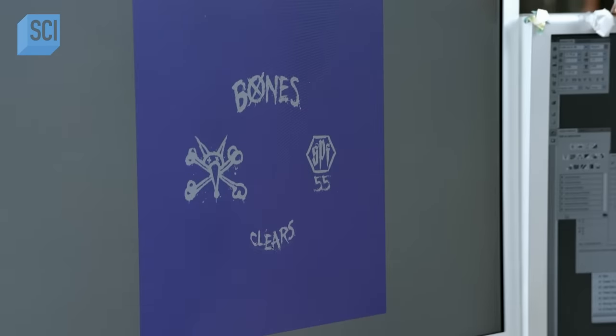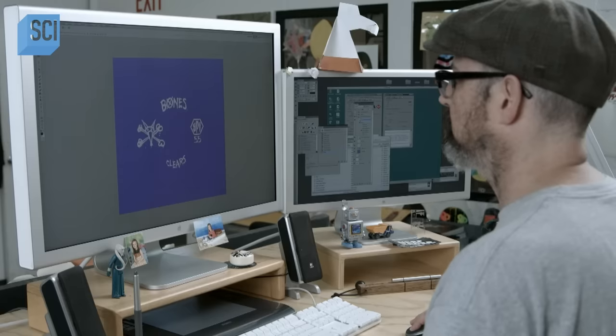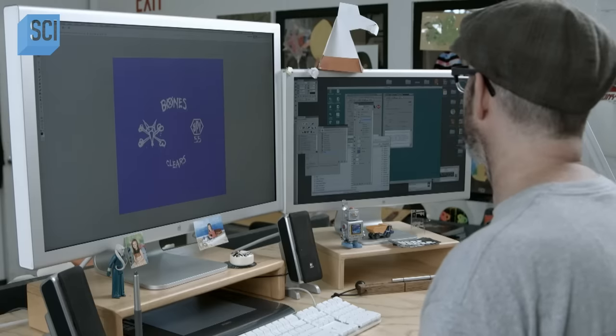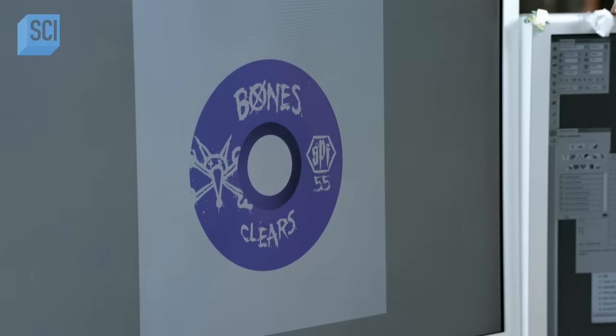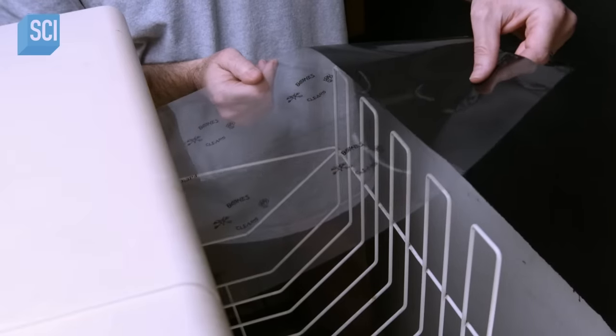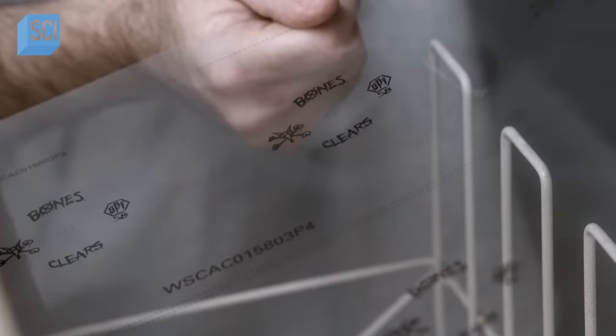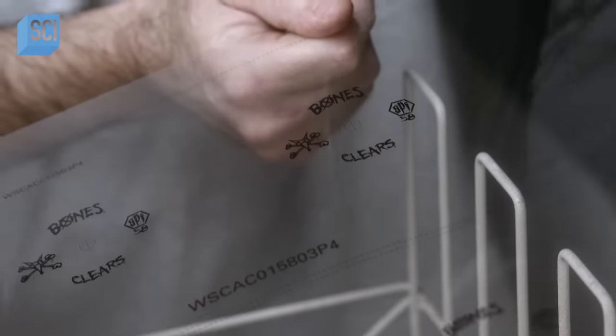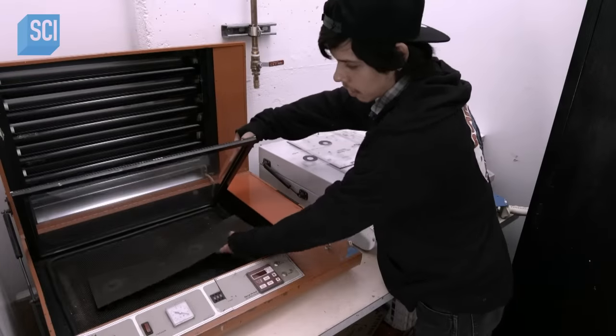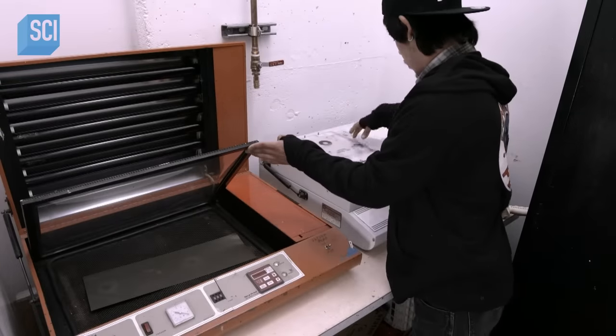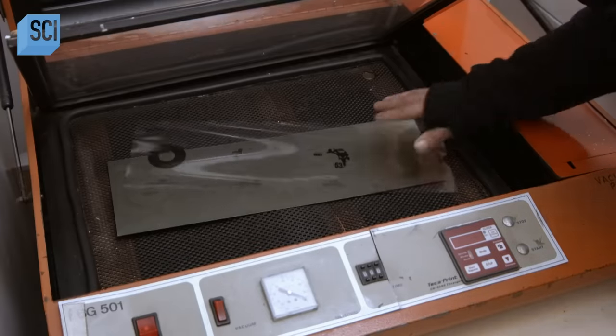To give the skateboard wheels visual impact, an artist selects and arranges graphic designs on a computer. He prints a film negative of the images he's chosen. They'll use this negative to produce a printing plate from a piece of metal that's been coated with a light-sensitive substance known as emulsion.